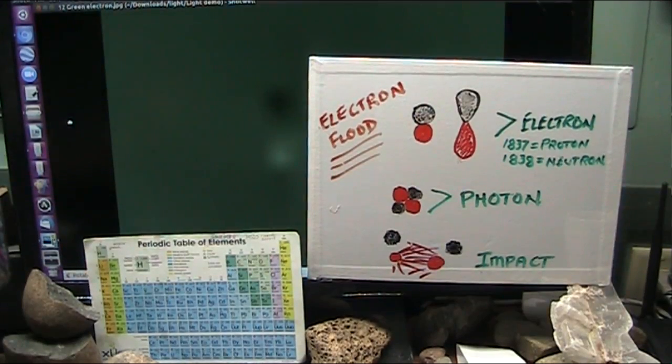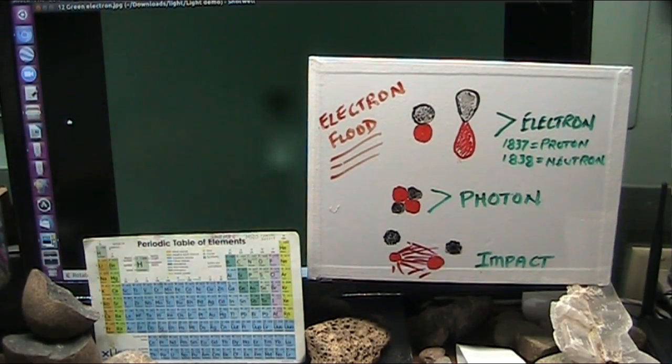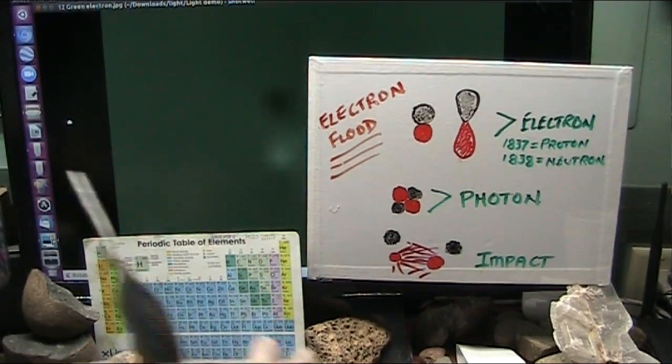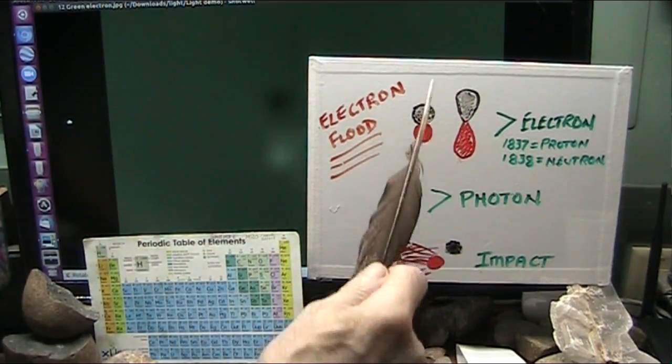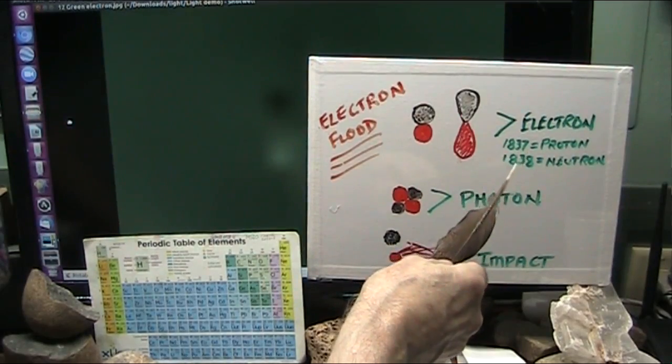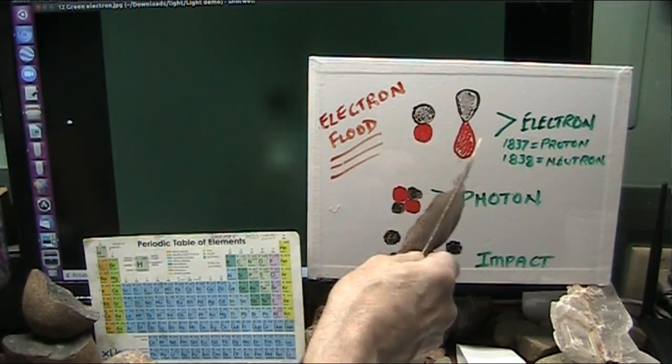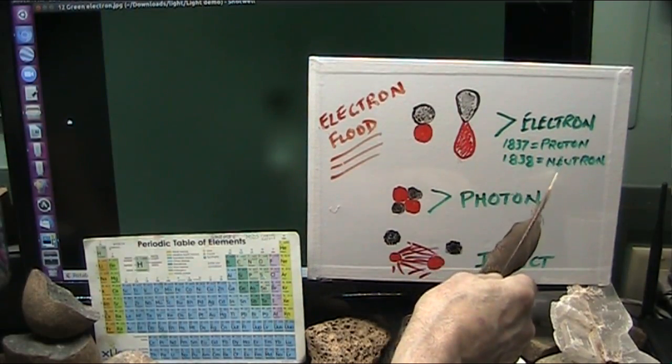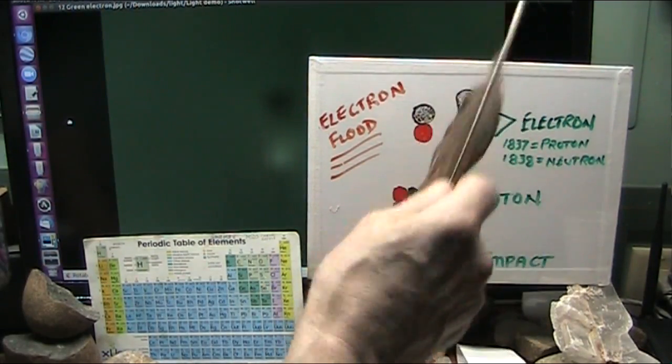Okay my friends, Roger, Mofaso University. In under five minutes, probably three, I will be able to explain to you what gravity is and actually show it to you. Now, electron flood theory says there is nothing that exists in the entire universe except electrons. And they say that there's protons and neutrons. They're actually constructed of electrons. 1837 makes a proton, 1838 a neutral neutron.